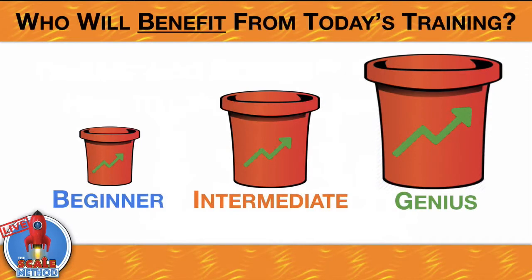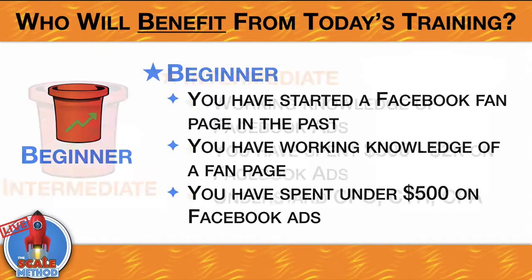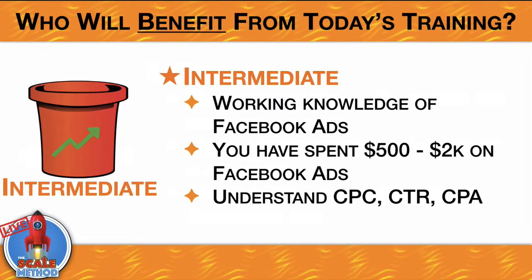Let's talk about who's going to benefit from this training — three different buckets: beginner, intermediate, or genius. A beginner has started a Facebook fan page, has some working knowledge of how it works, and has maybe spent under $500 on Facebook ads. Intermediate means you've spent anywhere from $500 to $2,000 on Facebook ads, and you understand acronyms like CPC, CTR, and CPA — that's cost per click, click-through rate, and cost per action or cost per acquisition.